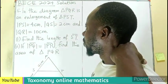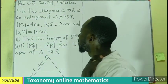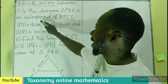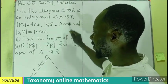Hello, welcome. Let's provide an answer to this question. In the diagram, triangle PQR is an enlargement of triangle PST.